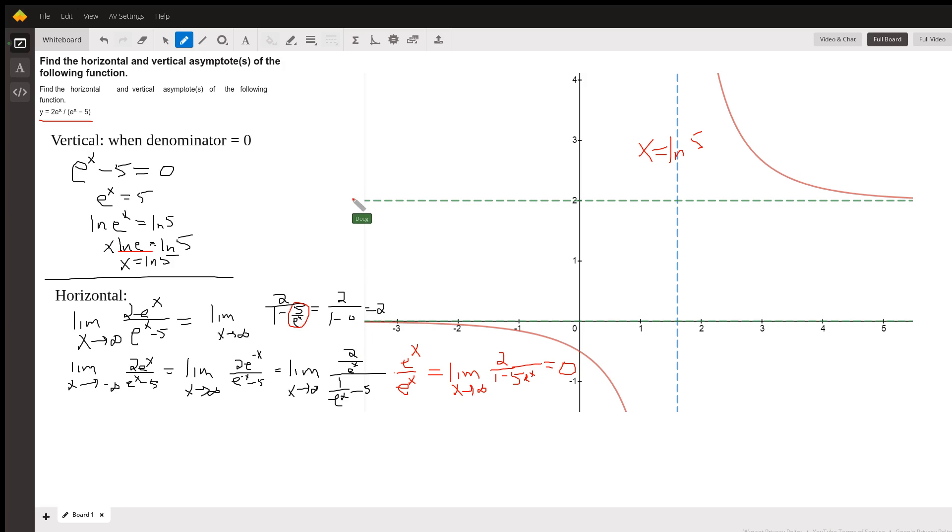So that's this horizontal asymptote right here. As x gets bigger and bigger, this red graph gets closer and closer to the line y equals 2.